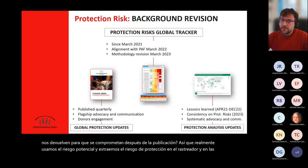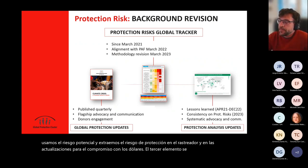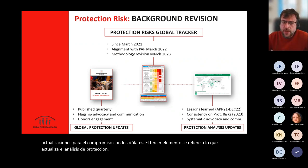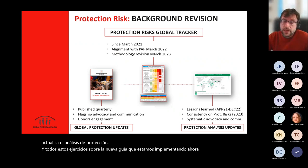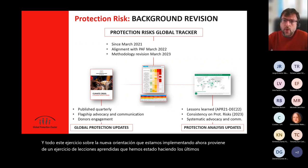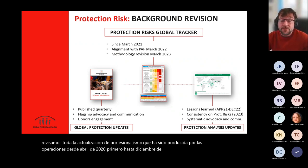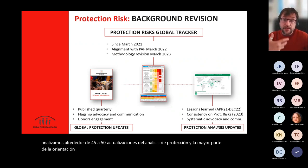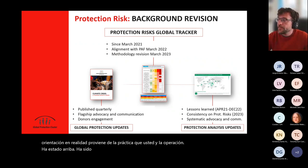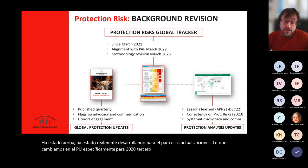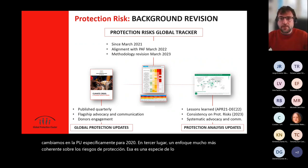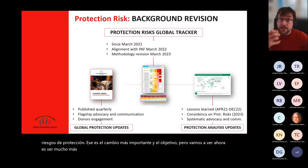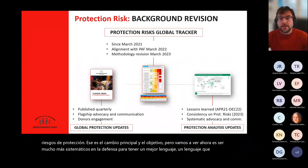We really use protection risks — both in the tracker and in the updates — for engagement with donors. The third element relates to the protection analysis updates. All this new guidance we are rolling out comes from a lessons learned exercise we conducted over the last three to four months, looking back at all protection analysis updates produced by operations from April 2021 to December 2022. We looked at around 45 to 50 protection analysis updates, and most of the guidance comes from practice that you and the operations have been developing. The major change for 2023 is a much more consistent approach on protection risks.